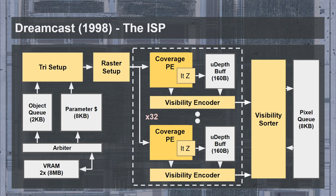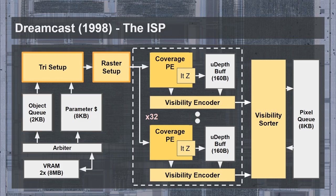Next we have the Image Synthesis Processor, responsible for determining the coverage of each triangle and housing the on-chip depth buffer. The ISP appeared to have two input queues: a 2 KB object list queue containing the list of objects for each tile bin, and an 8 KB parameter cache containing the actual parameters describing each triangle. A given triangle or strip may be present in multiple bins, so it makes sense not to duplicate the data. The object queue and parameter cache were both used in the triangle setup unit, which split up smaller triangle strips into individual triangles and sorted vertices for the raster setup. Raster setup is responsible for generating the coefficients for coverage testing and iterating triangle depth, requiring 14 cycles.